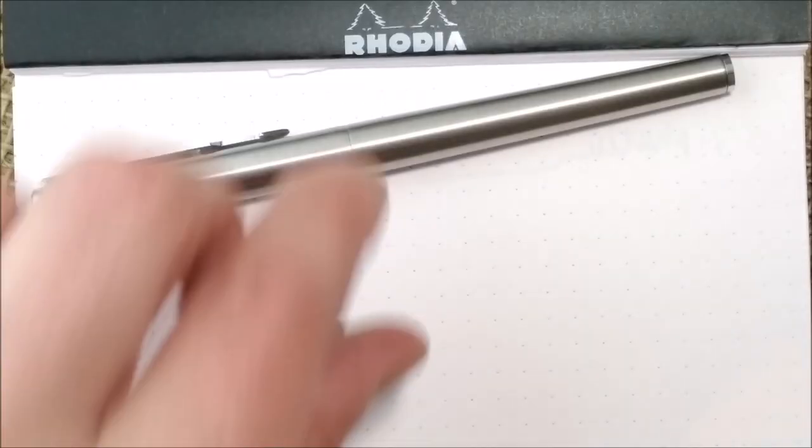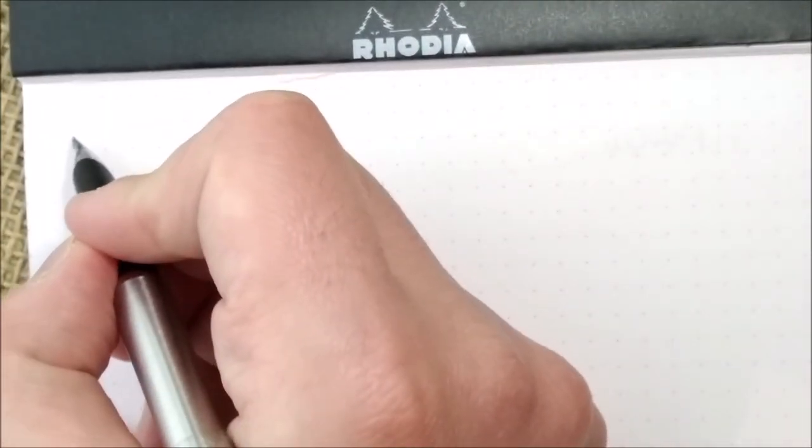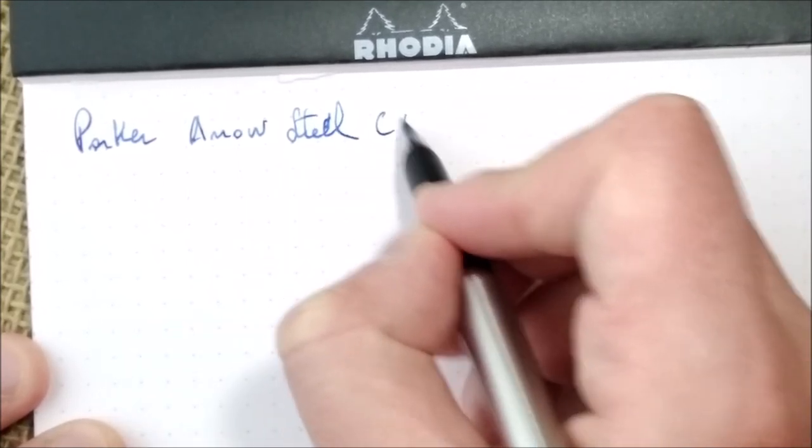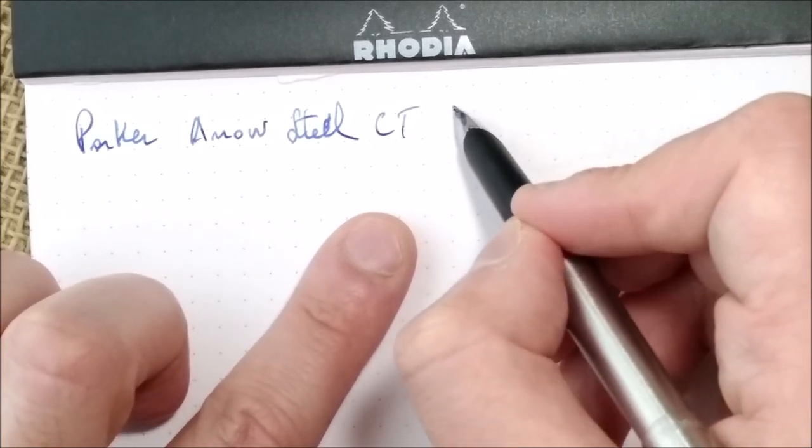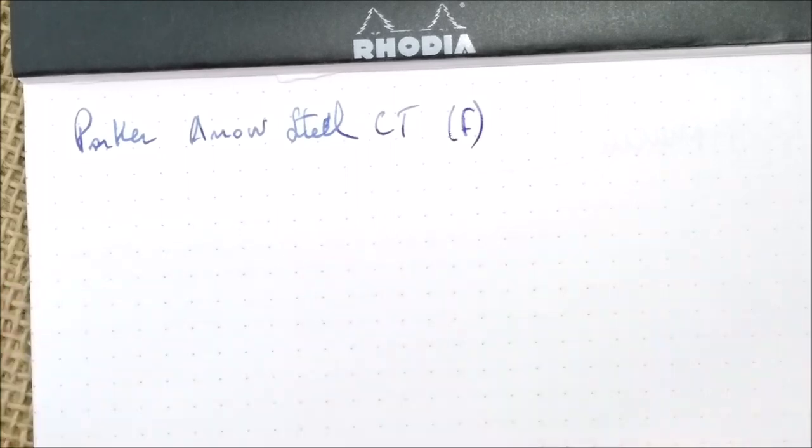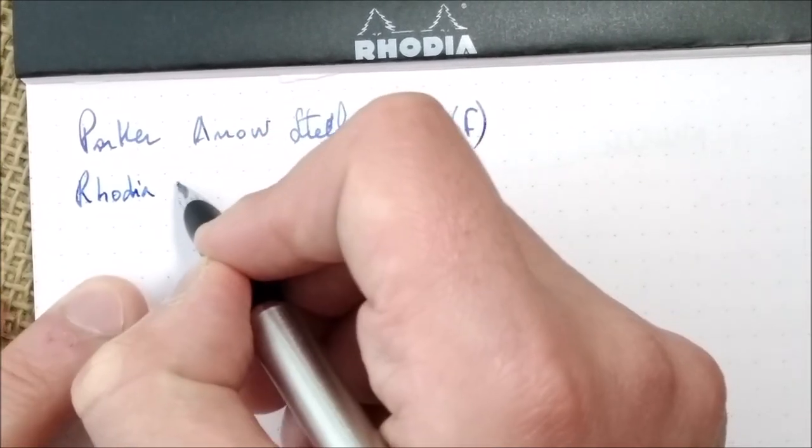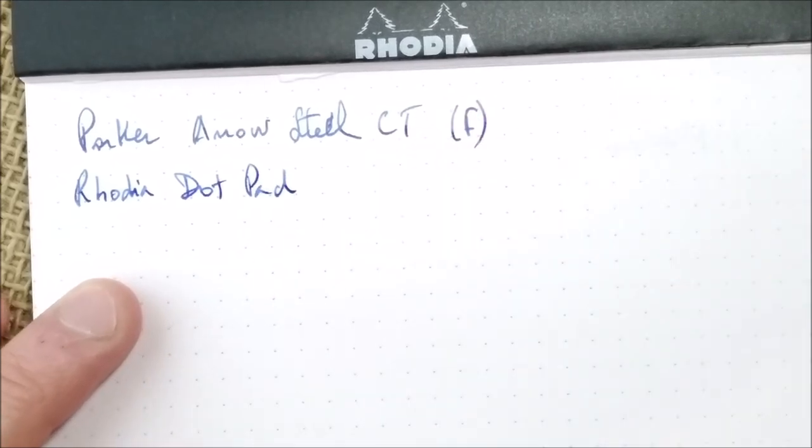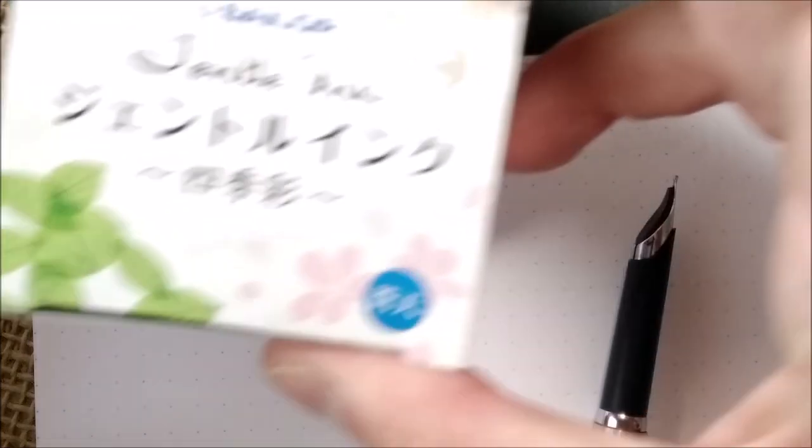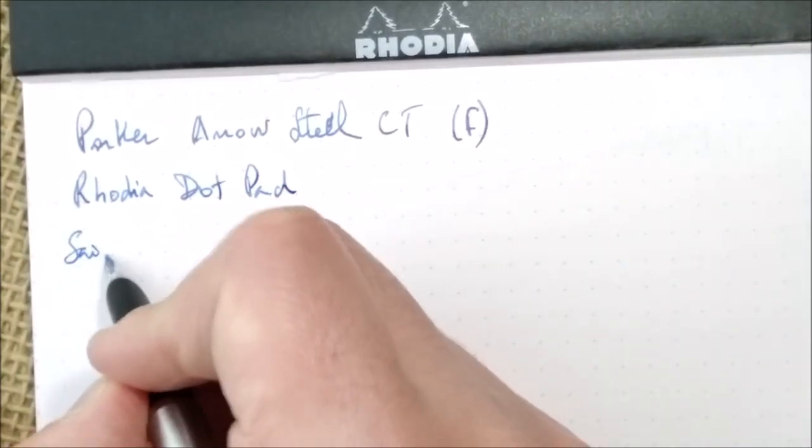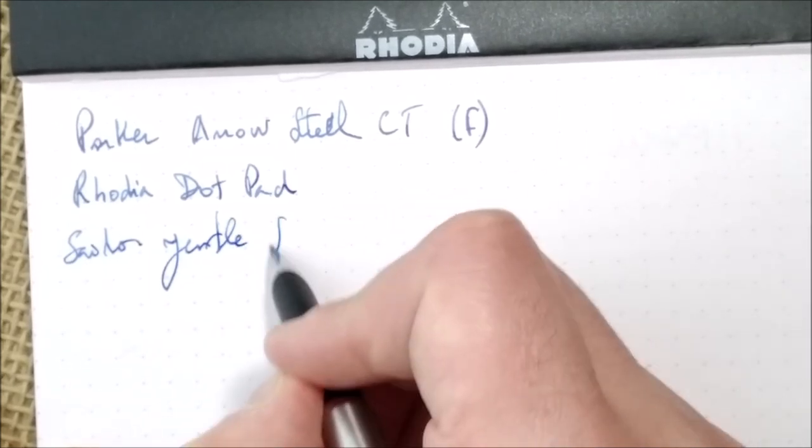Now let's go for the writing sample. Here we are with our pen and paper. Let's uncap it and I will post it because that's how I find it more comfortable. What we have here is the Parker Arrow Steel City. The nib on that one, I don't really know which it is, but I would say it is a fine nib, quite wet. It's a good fine nib I would say. The paper that we are using is the usual Rhodia, and the ink that I have inside is a very nice ink. It is the Sailor Gentle Ink in Sultan.